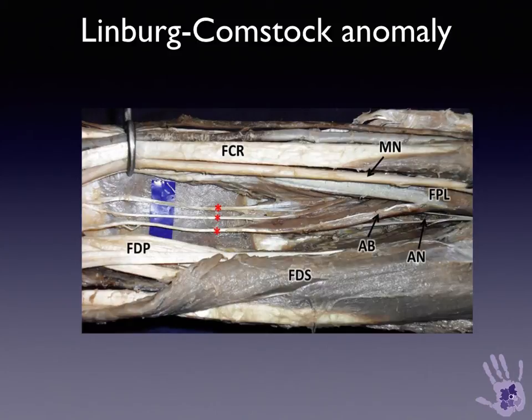It's not known why this anomaly exists. It may be that it's an evolutionary or developmental association between those two tendons that actually aids with precision grip and control of precision grip, but it equally well, particularly when it's involved with synovial proliferation, can be an acquired phenomena, and more on that later.